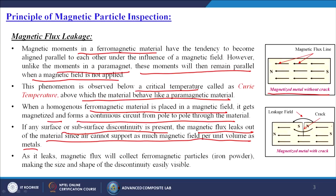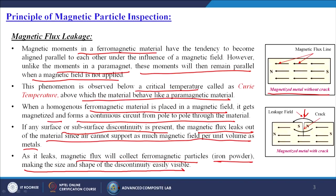If any surface or subsurface discontinuity is present, the magnetic flux leaks out of the material since air cannot support as much magnetic field per unit volume as metals. As I explained, all the magnetic flux lines are parallel, but when there are cracks, air enters the system and the magnetic field gets disturbed. As it leaks, the magnetic flux will collect ferromagnetic particles — generally iron powder — making the size and shape of the discontinuity easily visible.